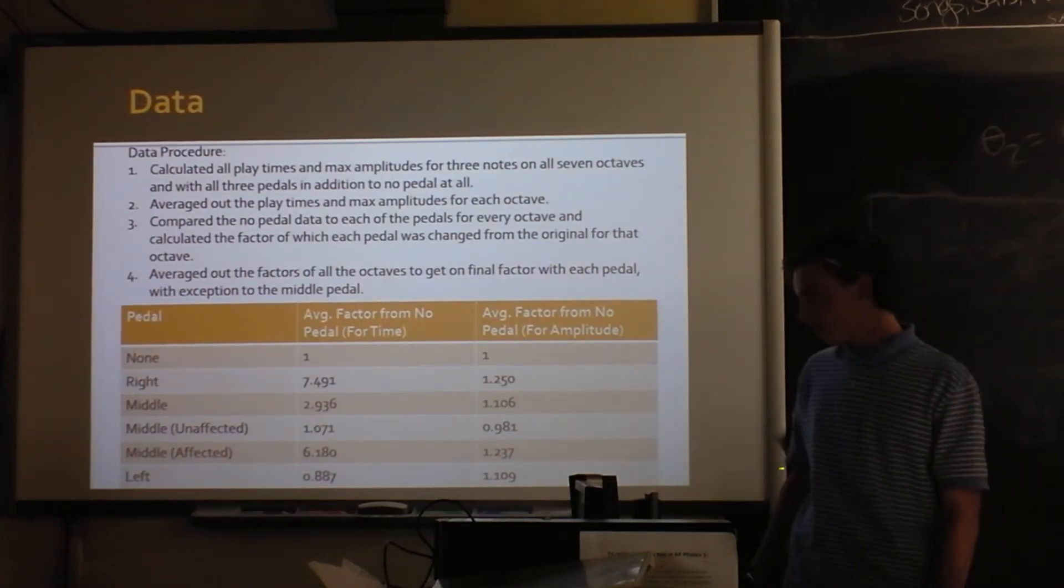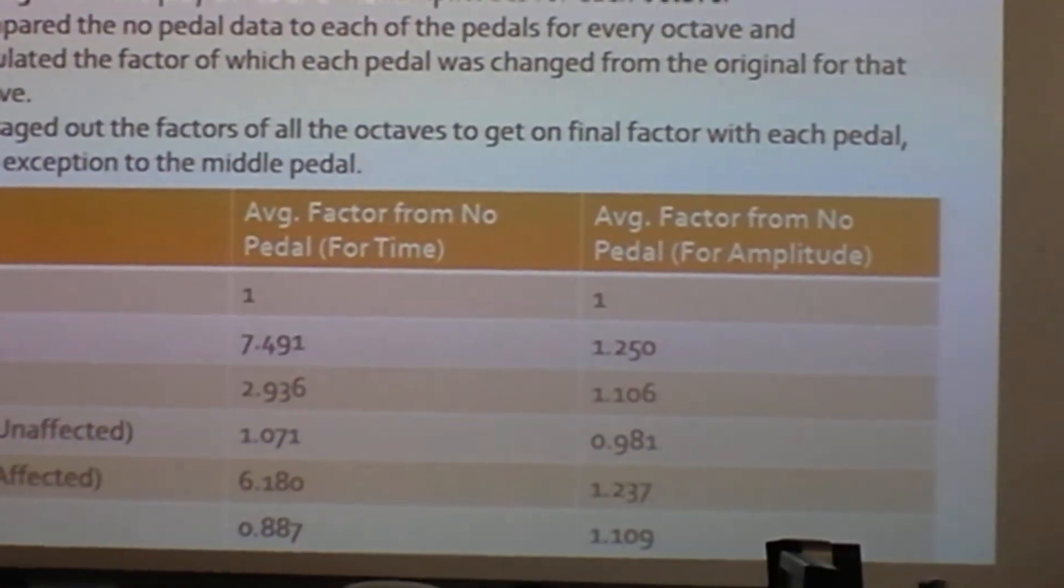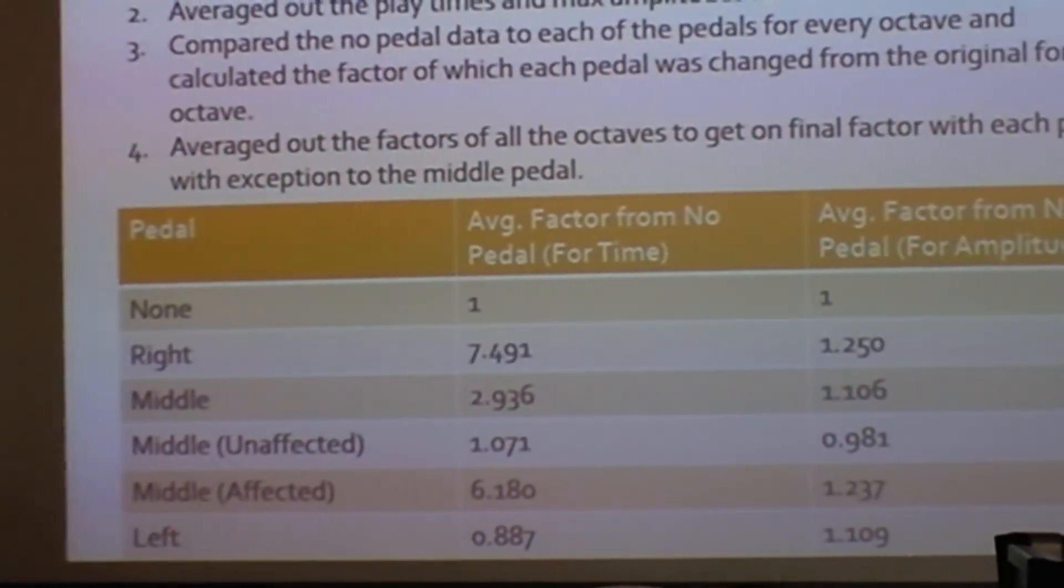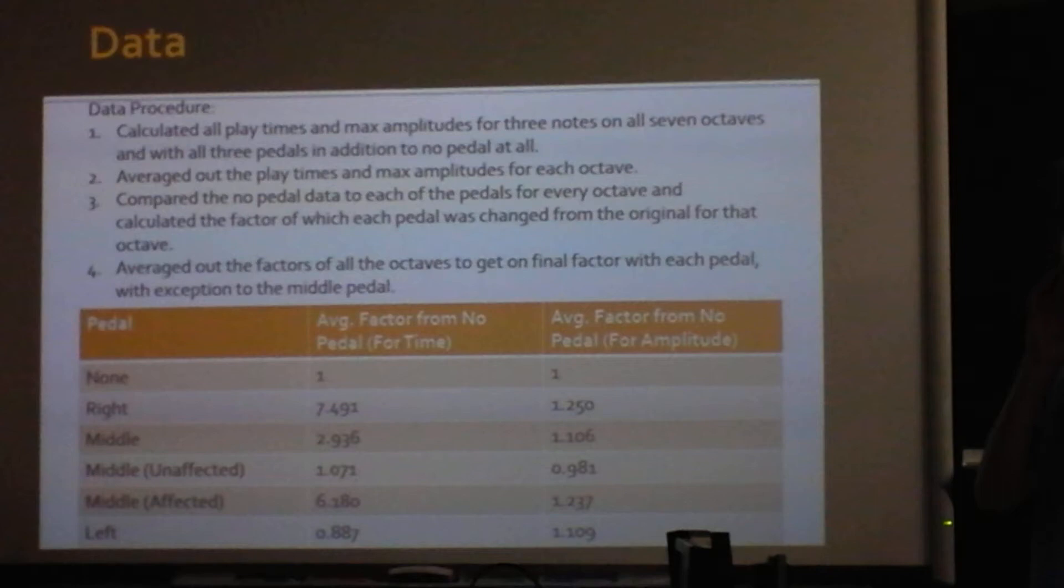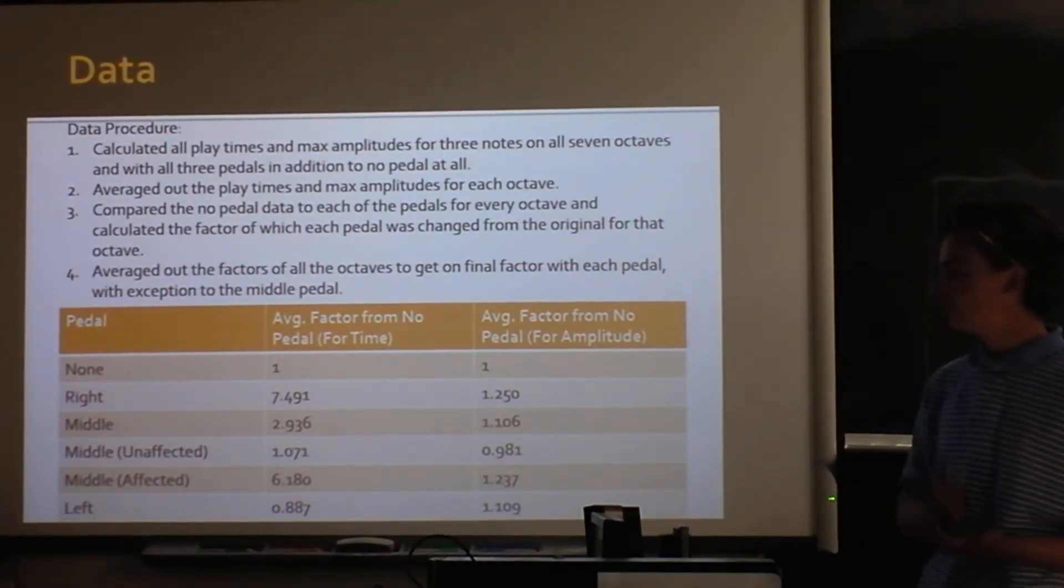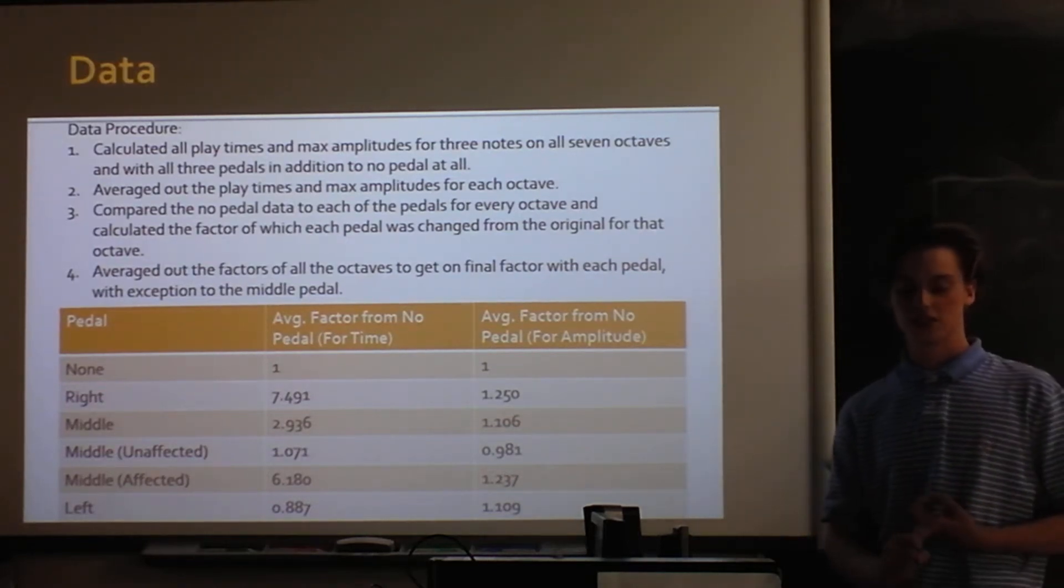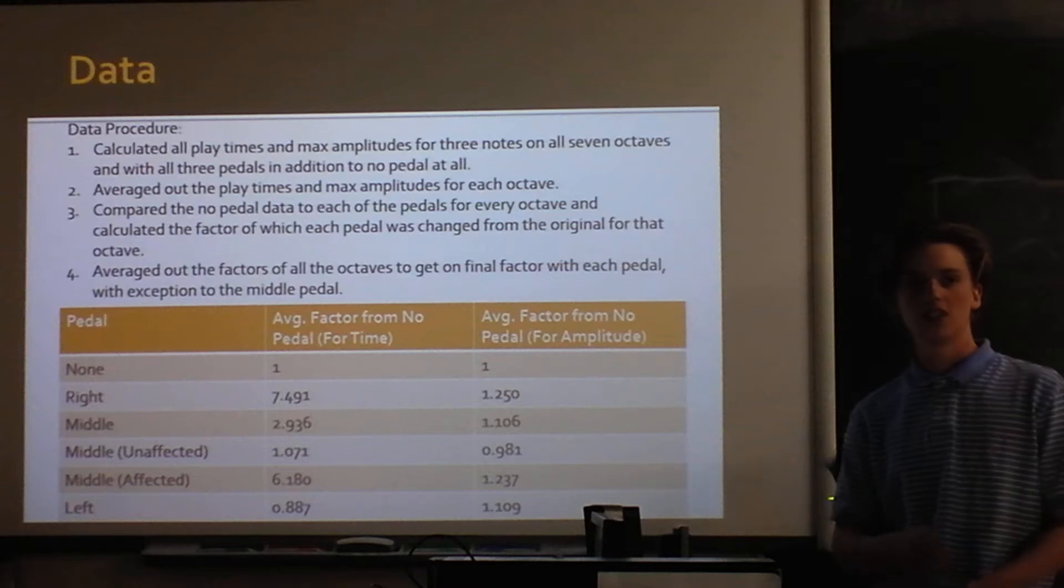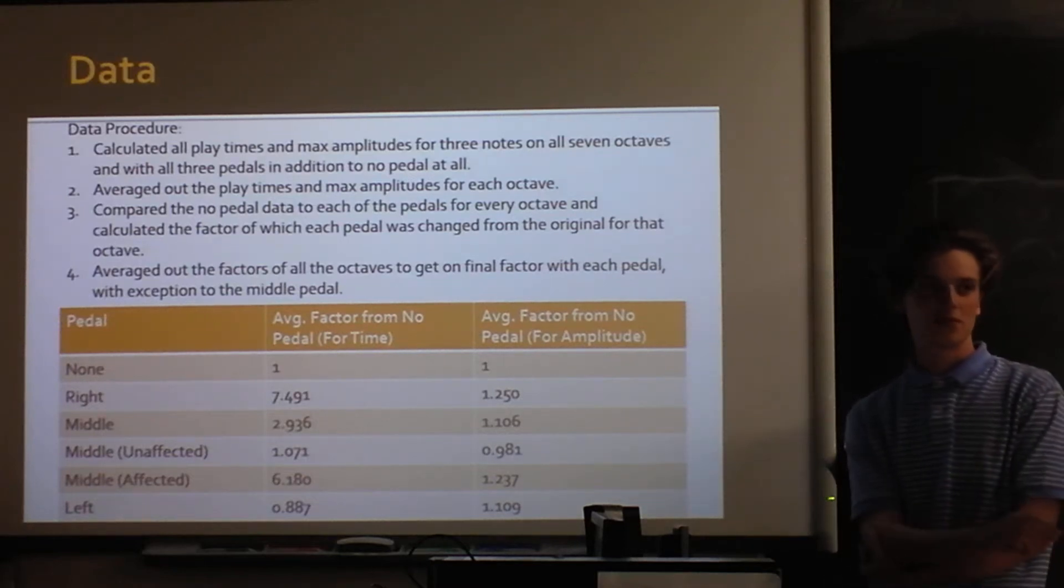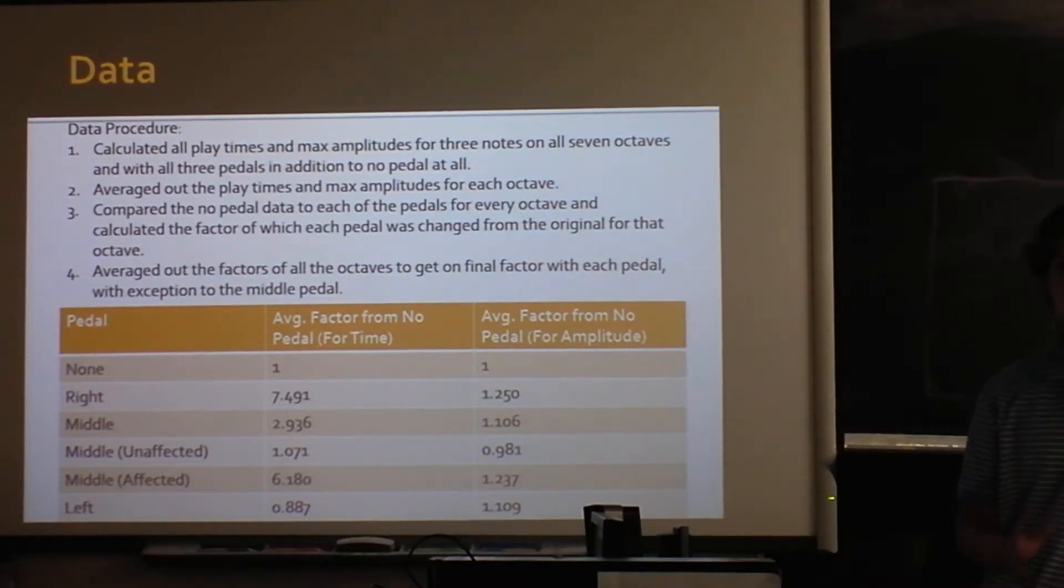And so for the data what I did is I took, so there's seven octaves on a piano, and I chose three notes from each octave, and I chose C, C sharp, and D, because I wanted to do a sharp note. And I also, when I was messing around, I noticed that the middle pedal switches between C sharp and D on one of the octaves, so I wanted to be able to demonstrate that.